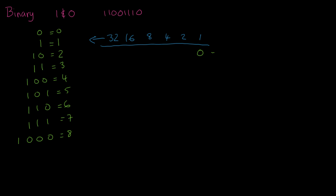If we put a zero in a column, the zero means don't count that column's value. If we put a one in there, it means count it. So a single 1 equals 1. The next number was 2, which is 1 0 — there's a one under the 2 column and a zero under the 1 column, so we count 2 but not 1: 2 plus 0 equals 2. Then 1 1 means one in the 2 column and one in the 1 column: 1 plus 1 equals 3.